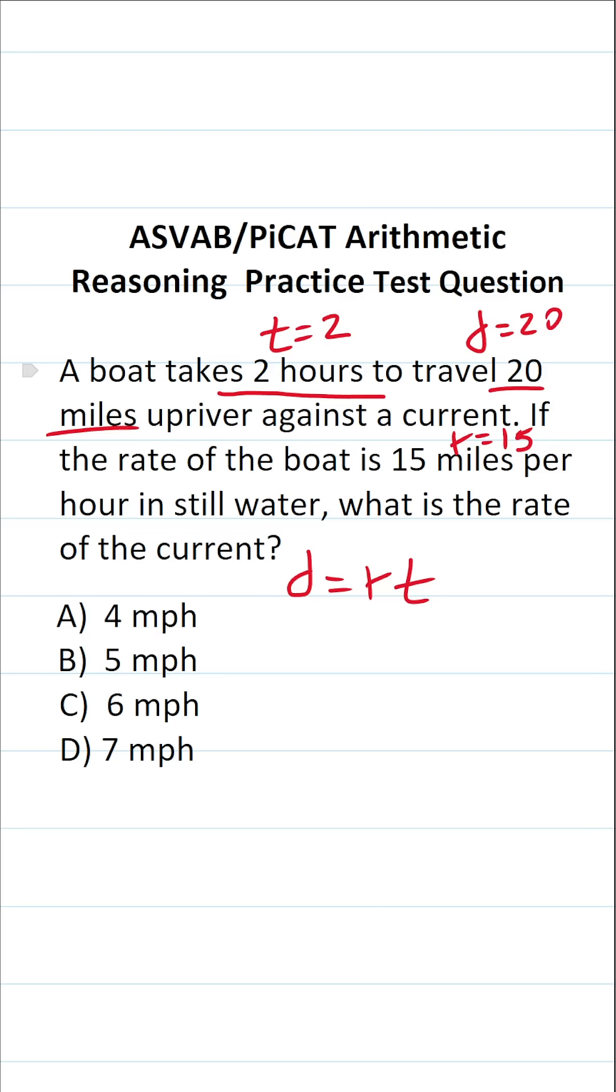This problem is somewhat challenging insofar as we have to make a slight modification to the distance formula to account for this new variable called current. So I'm going to let the letter variable C represent current, and let's think about how we're going to make this modification to the distance formula.